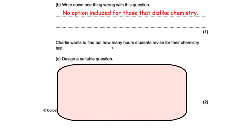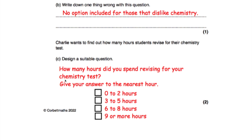Charlie wants to find out how many hours students revise for their chemistry test — design a suitable question. I've written: 'How many hours did you spend revising for your chemistry test? Give your answer to the nearest hour.' The response boxes are: 0 to 2 hours, 3 to 5 hours, 6 to 8 hours, or 9 or more hours. By saying 'to the nearest hour', I avoid issues with minutes and seconds, and there's a box for everyone whether they didn't revise at all or revised for 15 hours.